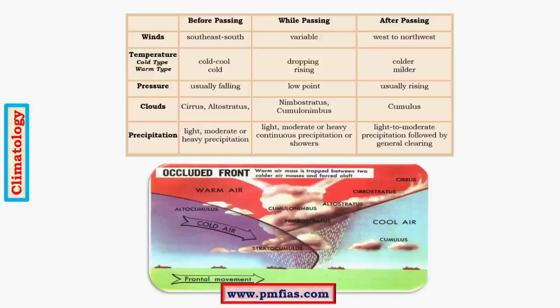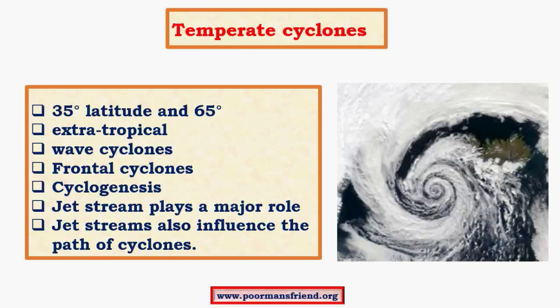The occluded front is the primary reason behind temperate cyclones. You can look at a table showing what happens before passing, while passing, and after passing the front — it is provided for understanding purposes. Now let us quickly move on to temperate cyclones.